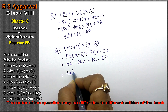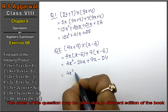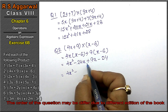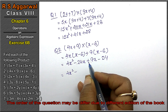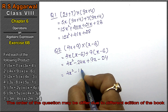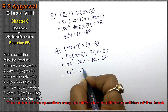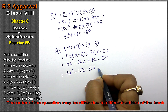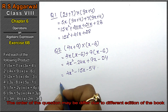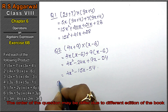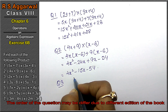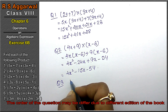So we get 4x squared. This minus and this plus have opposite signs, so we will subtract: minus 15x, minus 54 is the answer.